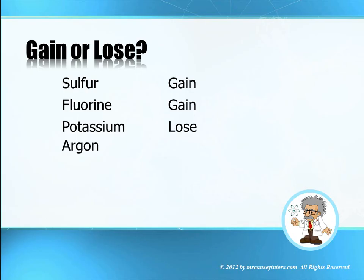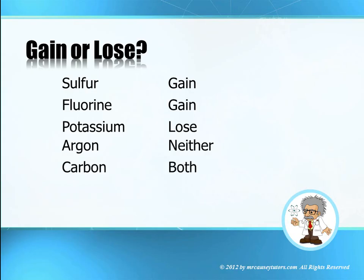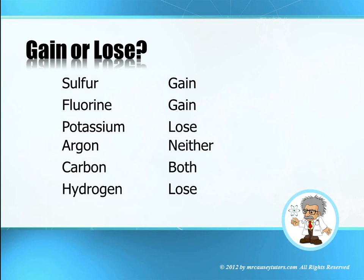Argon — neither, because argon is a noble gas. Carbon — it could go both ways. Carbon could gain four or it could lose four; it depends on what it's bonding with. If it's bonding with a metal, more than likely carbon is gaining. If it's bonding with a non-metal, in many cases it's losing. You have to weigh in on its electronegativity, which we'll learn about in another lesson. Hydrogen is going to lose — it only has one electron and tends to lose, but not always; there are exceptions. When hydrogen bonds with lithium or other alkali metals, it tends to gain electrons and has a negative charge, but usually hydrogen loses. Calcium is going to lose two instead of gaining six.